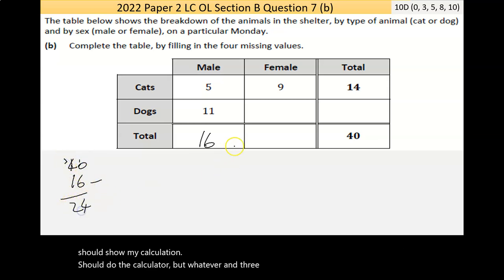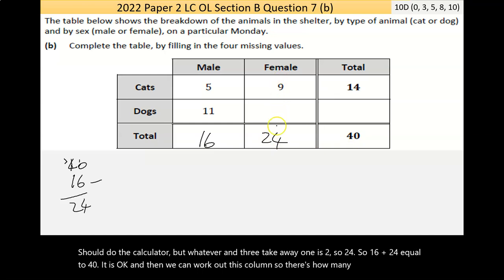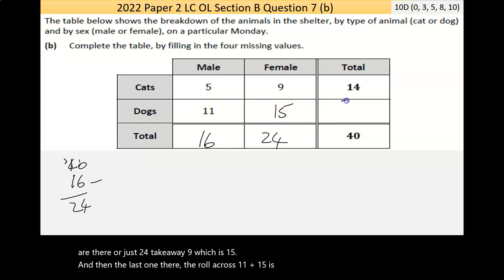3 take away 1 is 2, so 24. So is 16 plus 24 equal to 40? It is. And then we can work out this column. So there's how many female dogs and cats are there? Well, there's 24 take away 9, which is 15. And then the last one there, the row across, 11 plus 15 is 26. Now, this should add together to give the 40. So 26 and 14 is 40. And that's it.